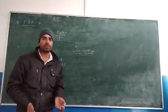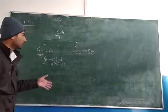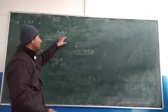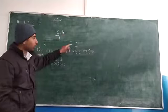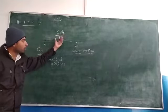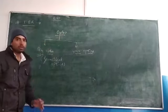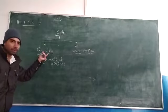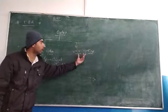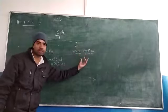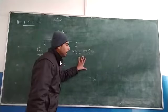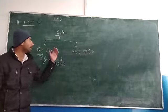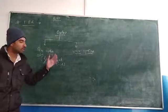Optics deals with phenomena like reflection, interference, etc. We divide optics into two parts: Ray Optics, which is Chapter Number 9, and Wave Optics, which is Chapter Number 10. Now let's understand what is the need for dividing it, as we start studying optics.